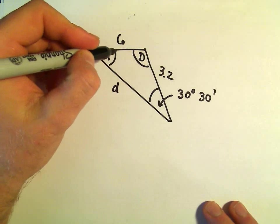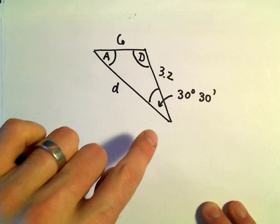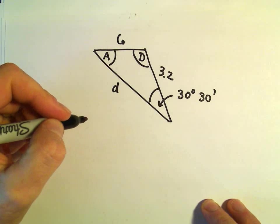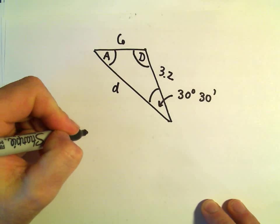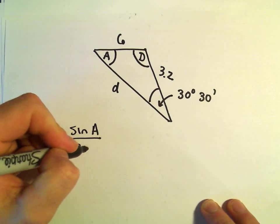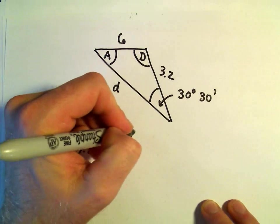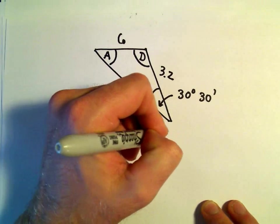So let's first figure out angle A. So a couple things here. We could do sine of angle A over its opposite side length, which would be 3.2. That's going to equal sine of 30 degrees.